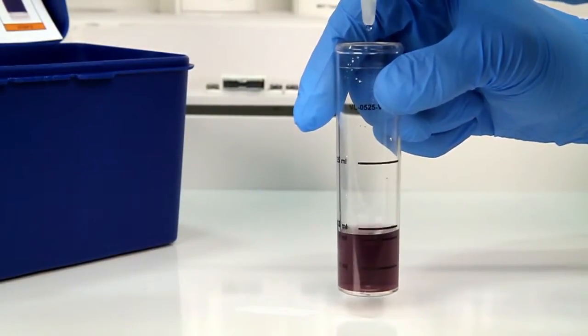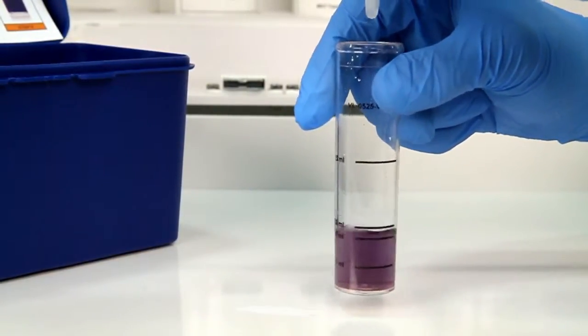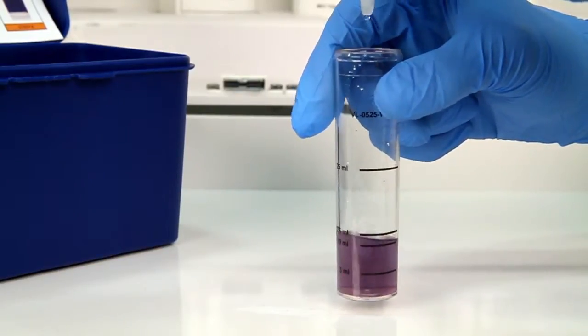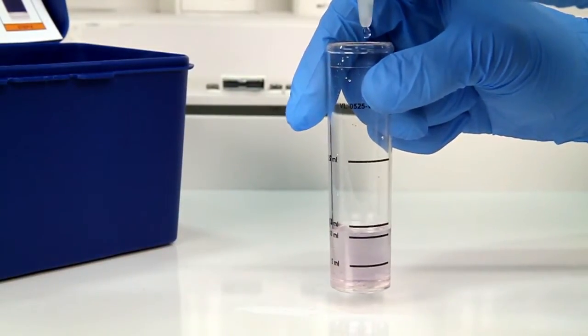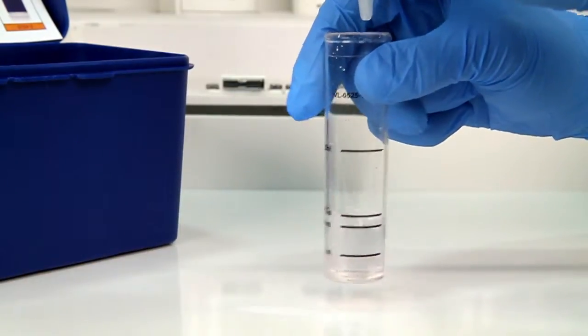After the addition of each drop of titrant, swirl the vial to make sure the sample is properly mixed. Count the number of drops during this step. The titration is complete when the sample turns colorless.